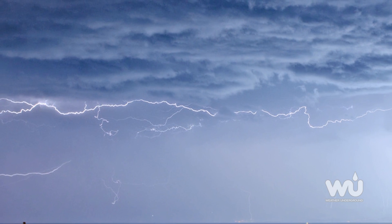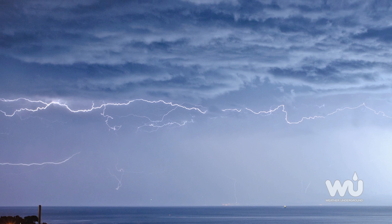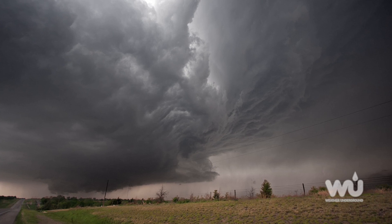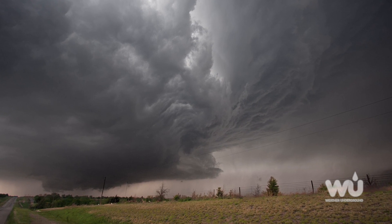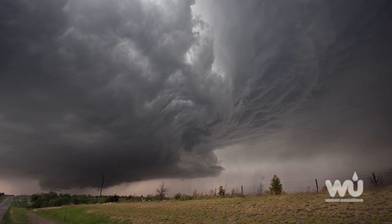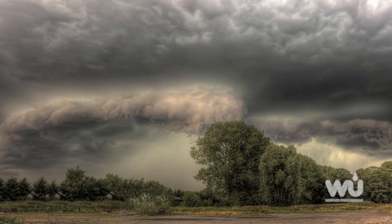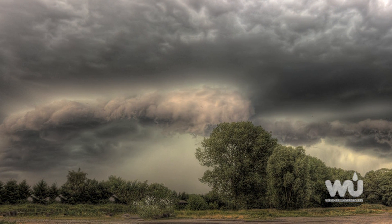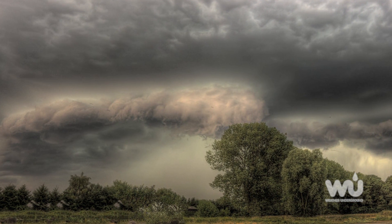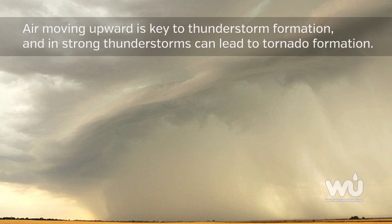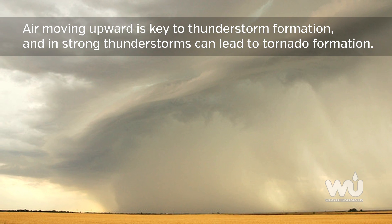Thunderstorms are characterized by cumulonimbus clouds, lightning, and lightning's acoustic effect on the atmosphere, thunder. They most often develop in the warmer months of spring, summer, and early fall with the presence of three main weather features—an unstable atmosphere, warm, humid air, and something to trigger upward or vertical motion.